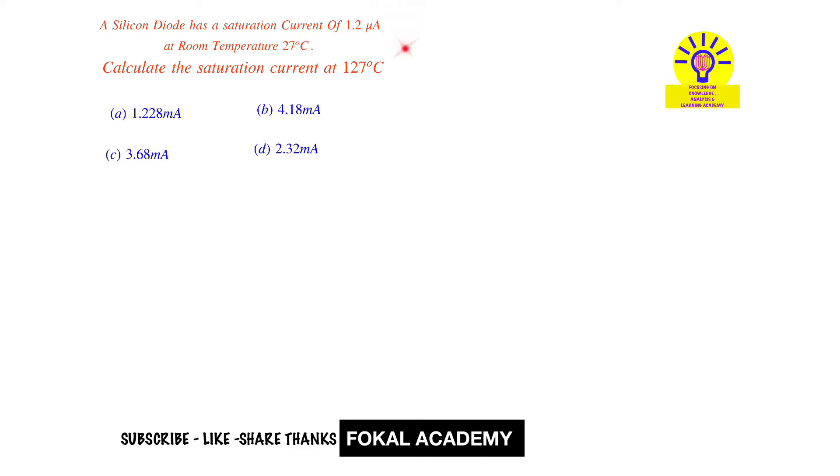Write the given data. At temperature T1, that is 27 degrees centigrade, the leakage current Io1 is given as 1.2 micro amperes. We need to find the saturation current at 127 degrees centigrade, that is at temperature T2. What is the value of Io2?